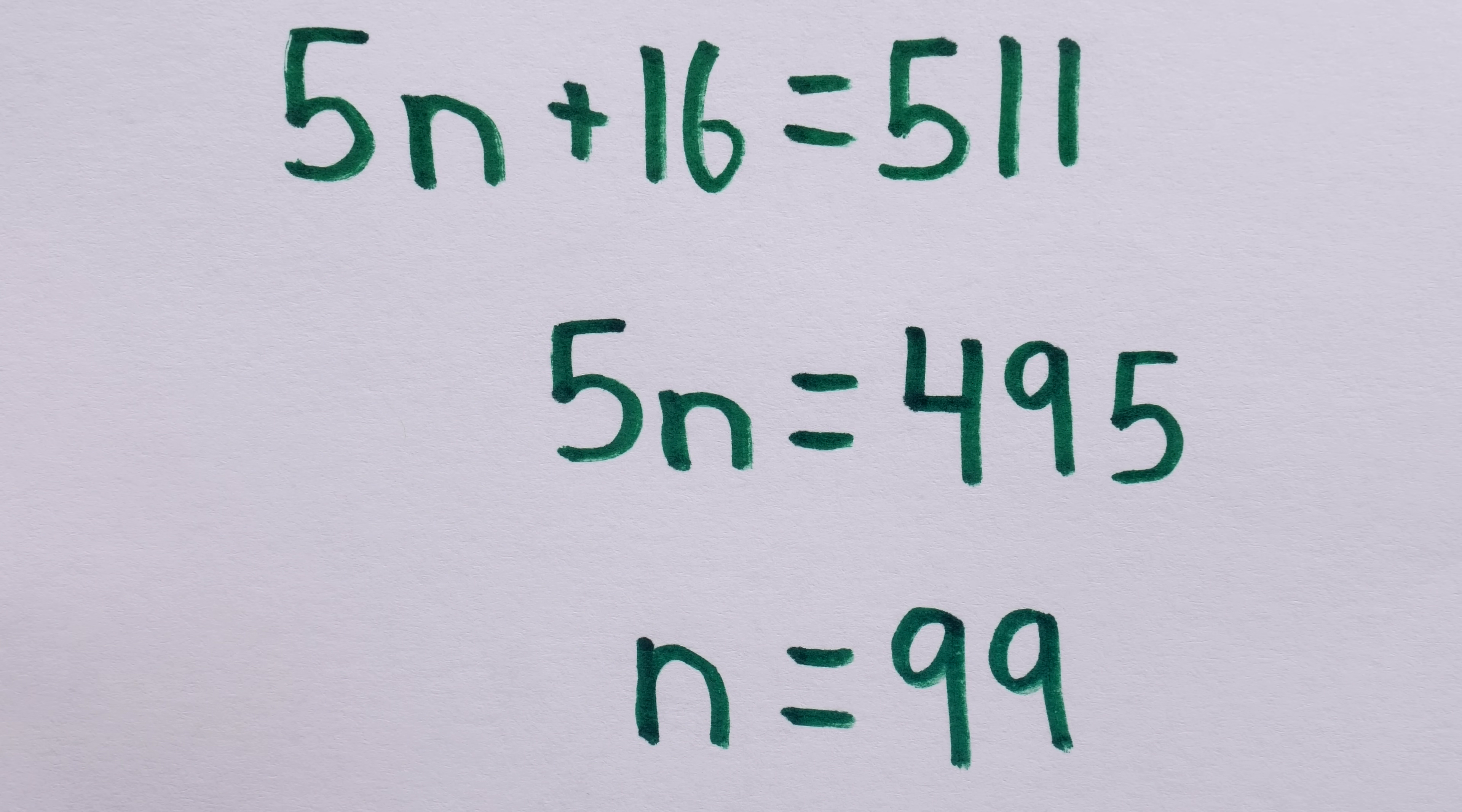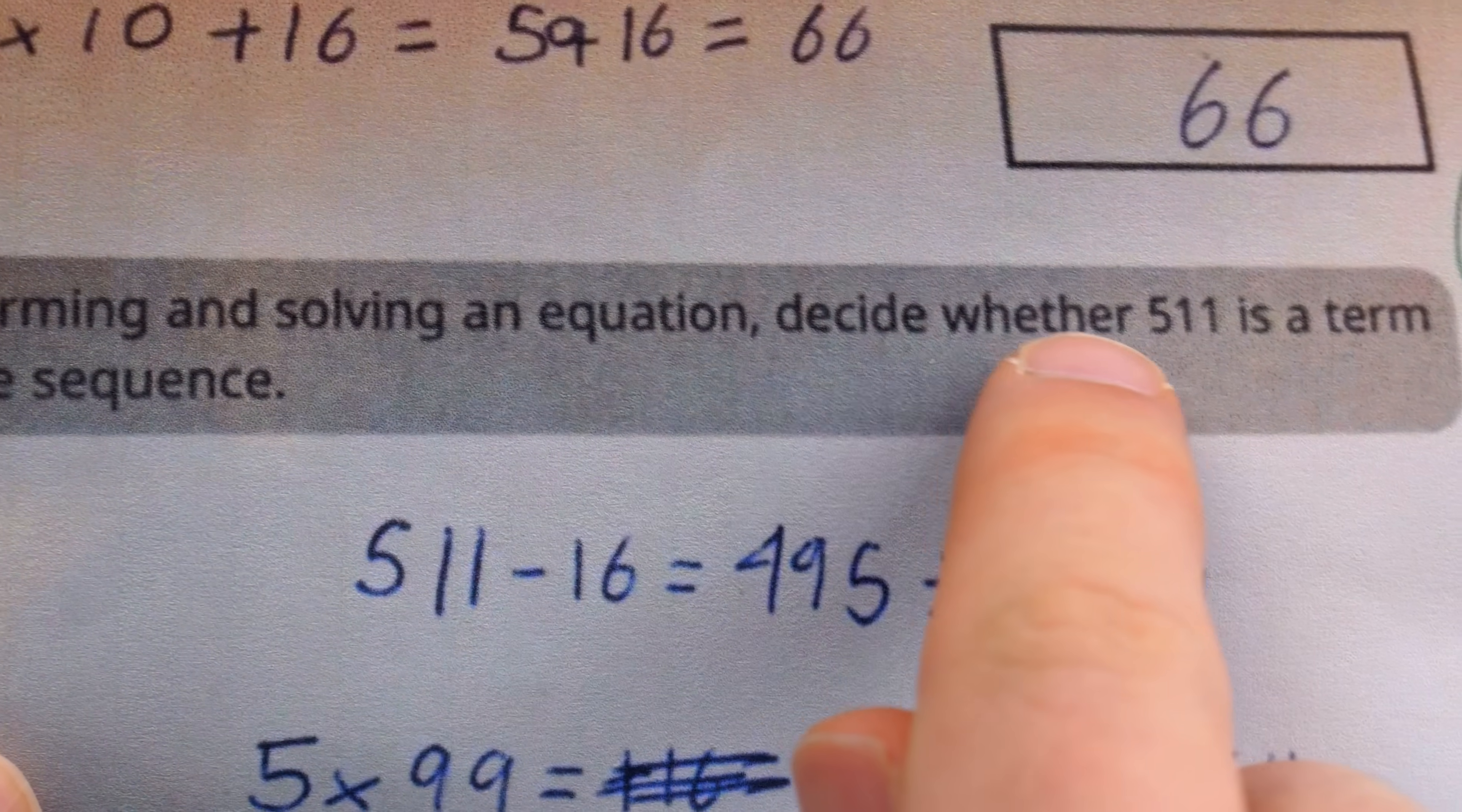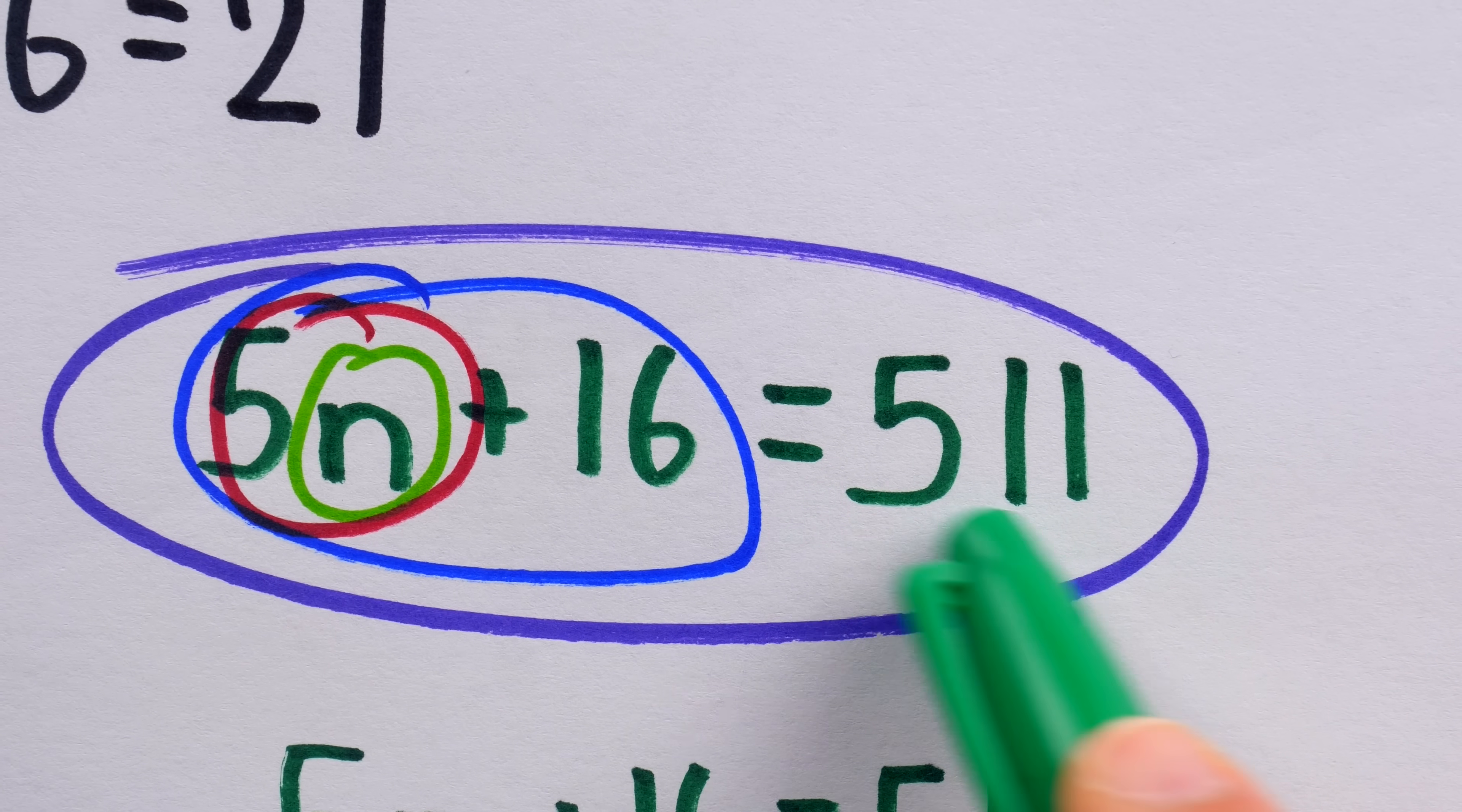Now, a lot of students who skip over instructions might be tempted to stop here. Oh, that's what n is. We found the missing value. It's 99. But of course, finding n was not our question. Our question didn't even mention n. It just said, by forming and solving an equation, decide whether 511 is a term of the sequence. So what's our conclusion from this? Well, this means that if we plug n equals 99 into the expression that defines the sequence, we'll find that the 99th term is in fact 511.